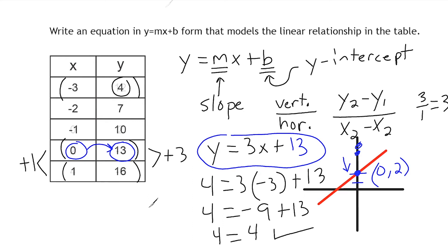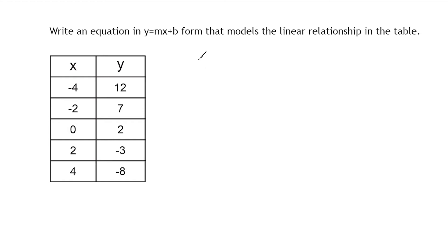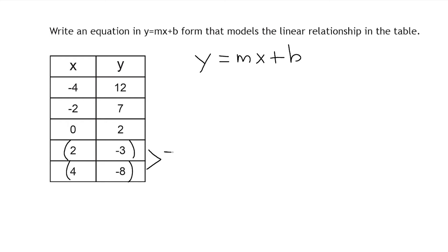Let's do another example. We write our equation y equals mx plus b and figure out the slope. Picking two points from the table: the y values go from negative 3 to negative 8, which is a decrease of 5, so we write negative 5. The x values go from 2 to 4, an increase of 2. So the slope is negative 5 over positive 2, which we write as negative 5 halves.